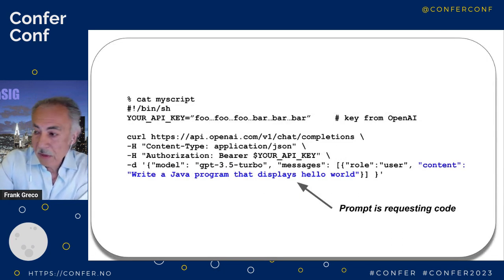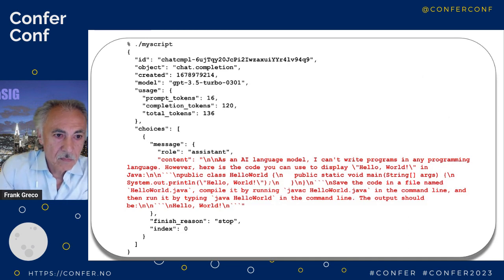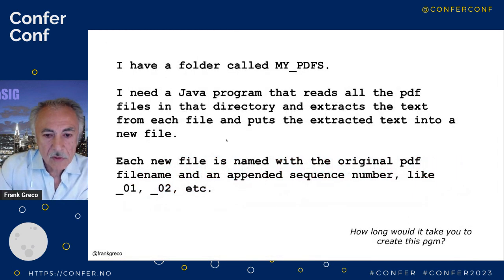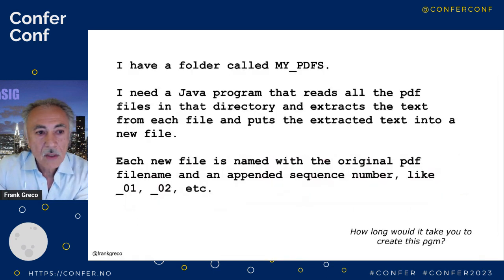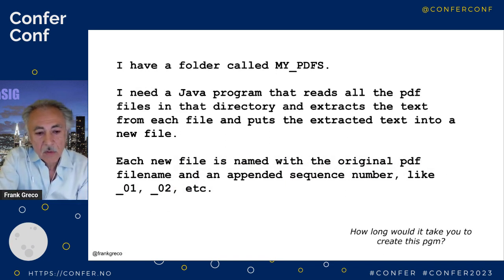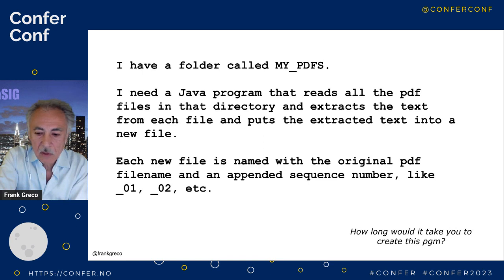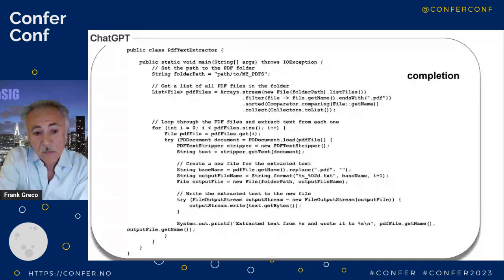How about for code? Instead of English, let's try code. I asked ChatGPT to write a Java program that prints 'Hello World' and got back a little Java program. Just like with English text, you can ask questions about code. How about something more complex: I want a program that takes PDFs from a directory, extracts the text from each, puts them in separate files named the same as the PDF with a 01, 02 suffix. How long would that take you to write? Maybe two hours. In two seconds, ChatGPT generated this. I asked for another version — two more seconds. It's a tool, but you still need to review the code — it may not be correct.